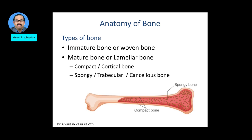We have the immature bone, also known as the woven bone, which is seen during the phase of fracture healing. Then we have the mature bone or lamellar bone, which is seen throughout the body. The mature bone has a compact or cortical bone portion and a spongy or cancellous bone portion. In the compact bone, the lamellar layers are densely arranged, while loosely arranged in cancellous or spongy bone.